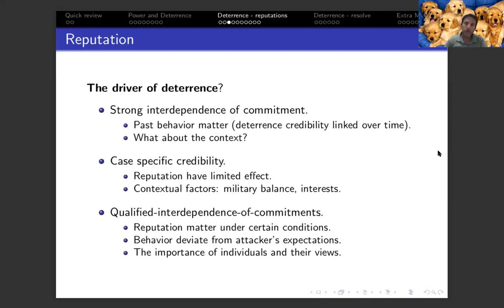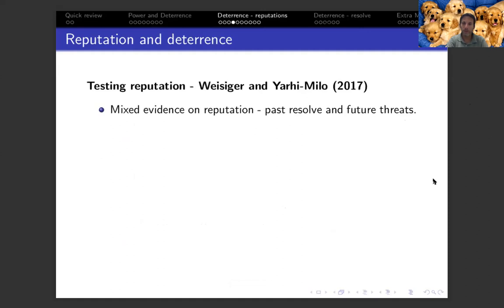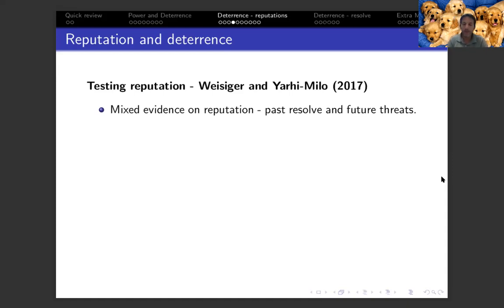The question of whether reputations matter is one of the central questions we explore from a research standpoint. We will look at the work of Weislinger and Yarchy Milo. They begin with the argument that there is mixed evidence regarding the effects of reputation. They suggest thinking about reputation from a strategic perspective using a game theory model that looks at interactions between two actors — not just single interactions, but what's called repeated interactions. So the two countries we're thinking about will engage in multiple interactions over time.